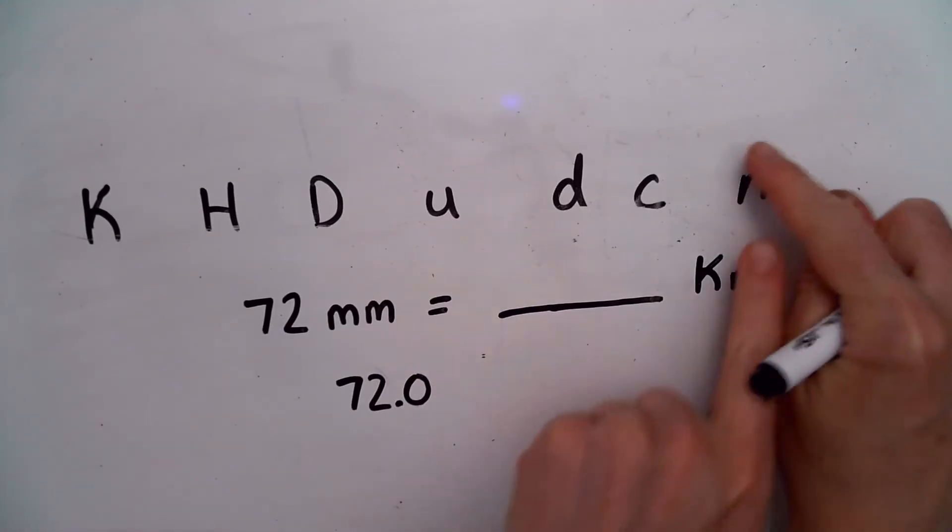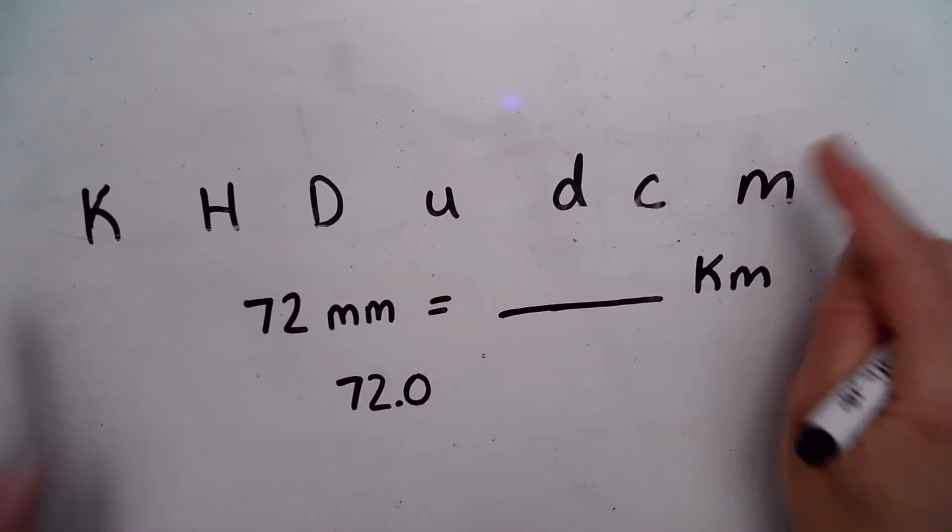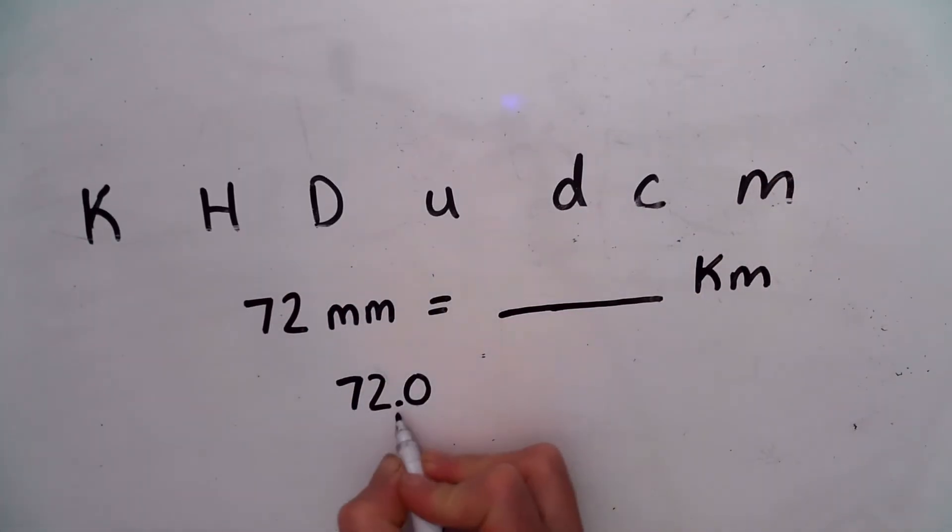And since I moved my decimal six times to the left, I'm going to draw little loops to show each time I move it. One, two, three, four, five, six. And then I'm going to fill each loop with a zero.